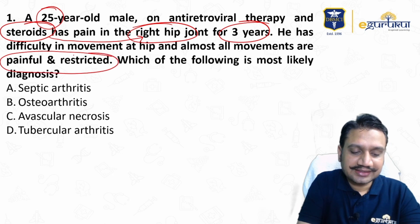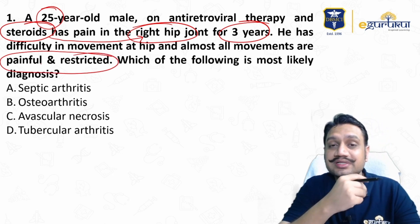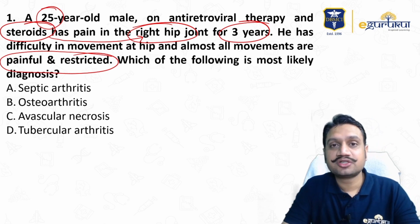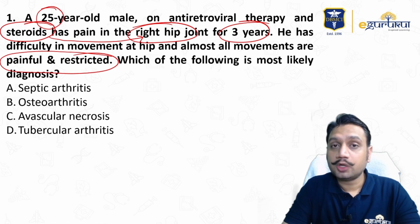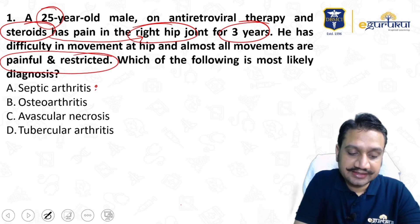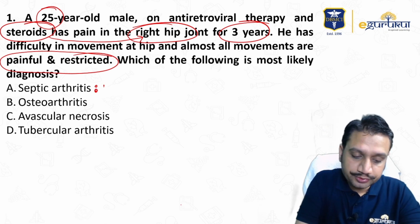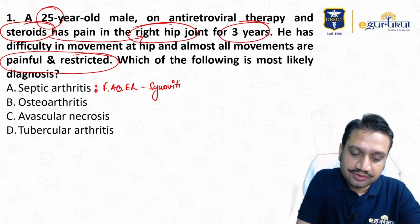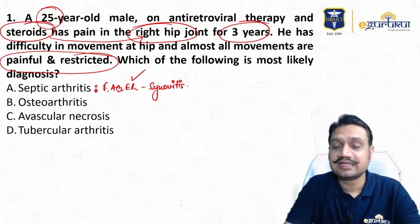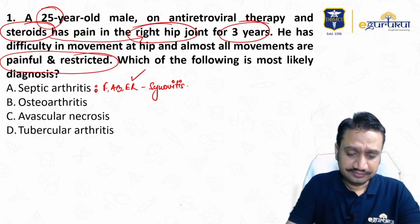Almost all movements are painful and restricted — it is not that the hip is restricted in only one direction. There is a global restriction of movement. We have a young male without trauma, on steroids, with right hip pain. When you talk about septic arthritis, the attitude of the hip is usually flexion, abduction, and external rotation — that is the stage of synovitis.